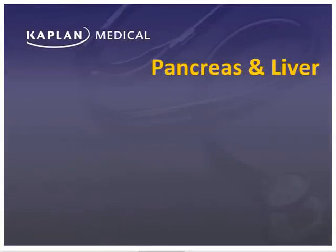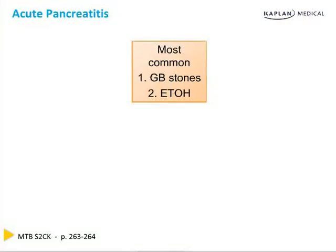We will now discuss a very high yield area for the Step 2: pancreatitis. The two most common causes of pancreatitis in the United States are gallbladder stones and alcoholism.